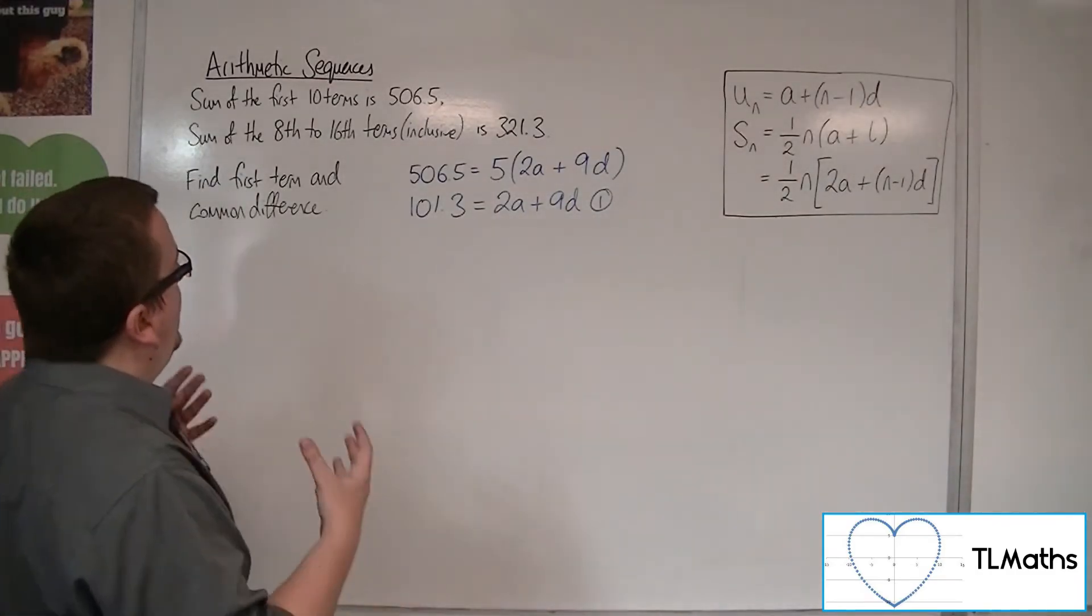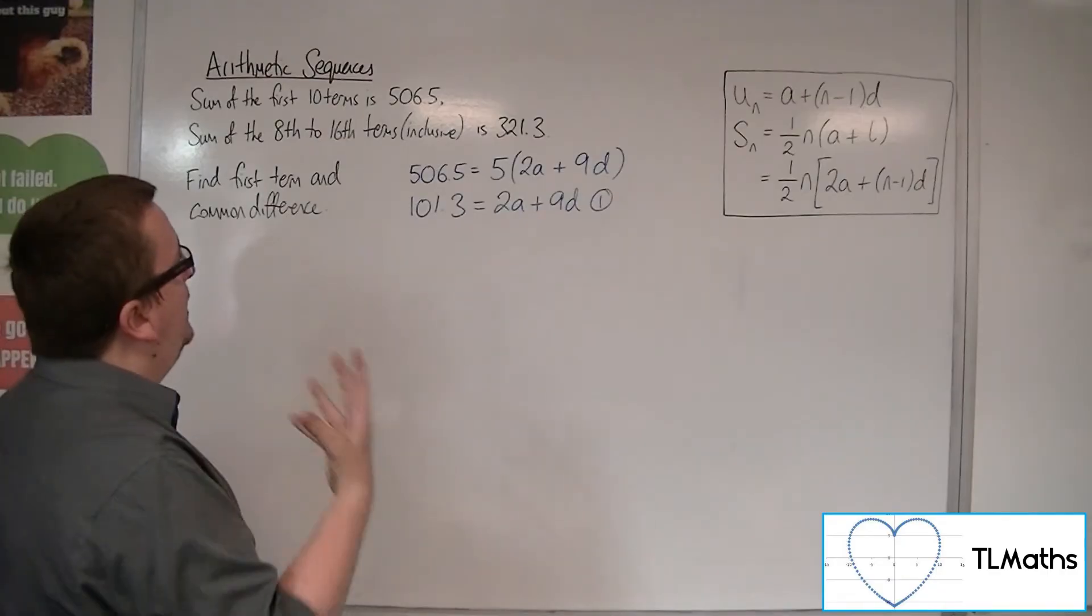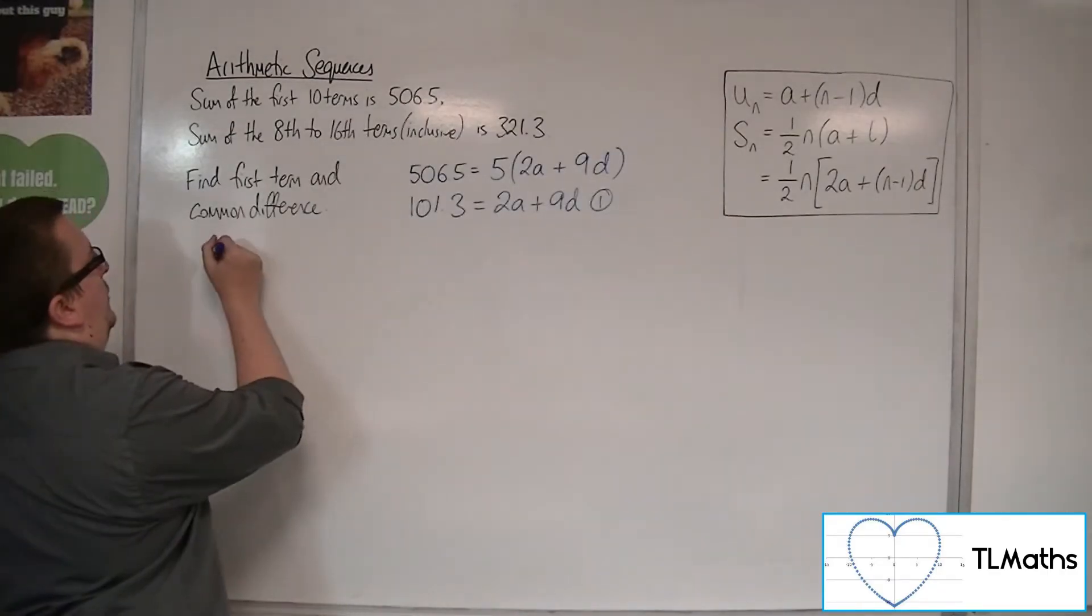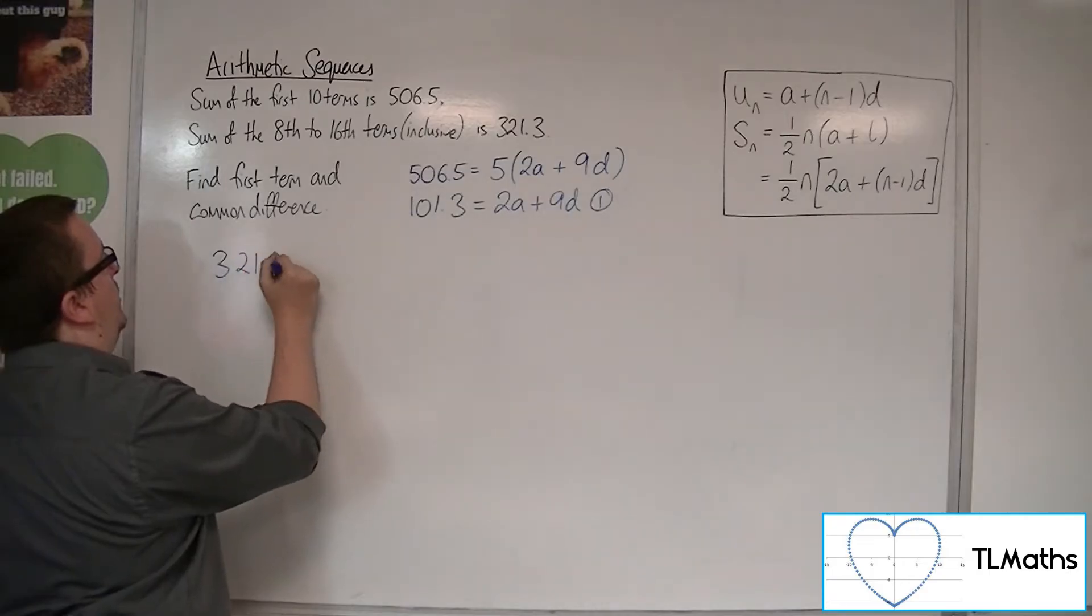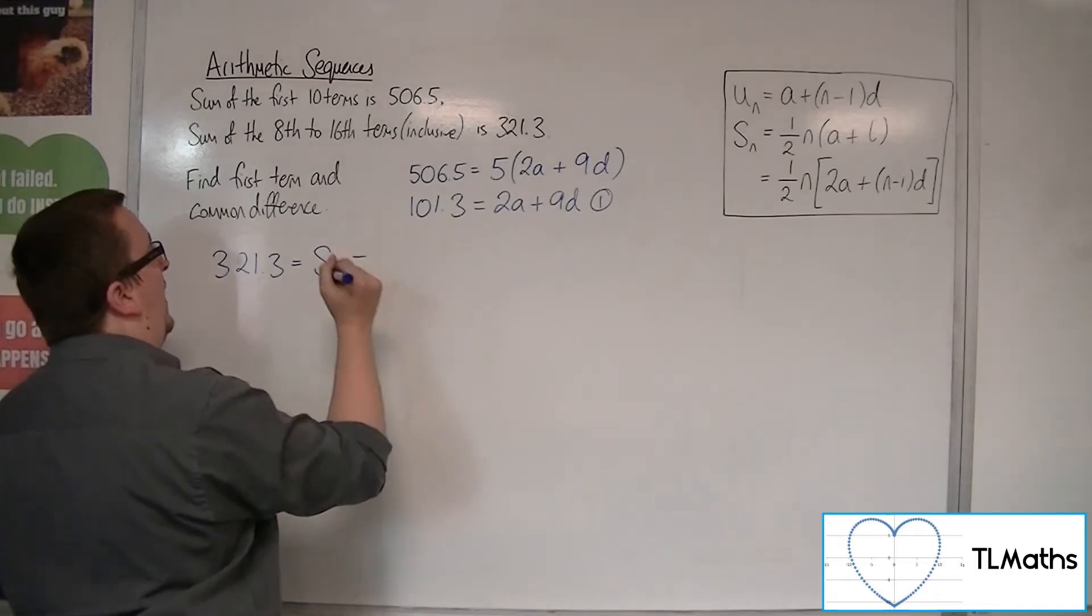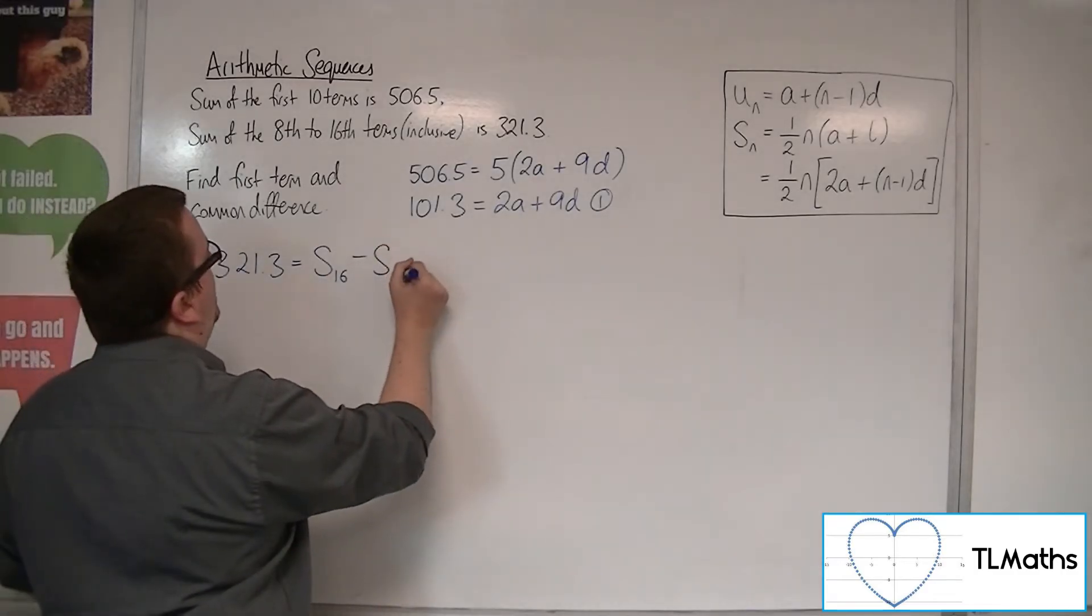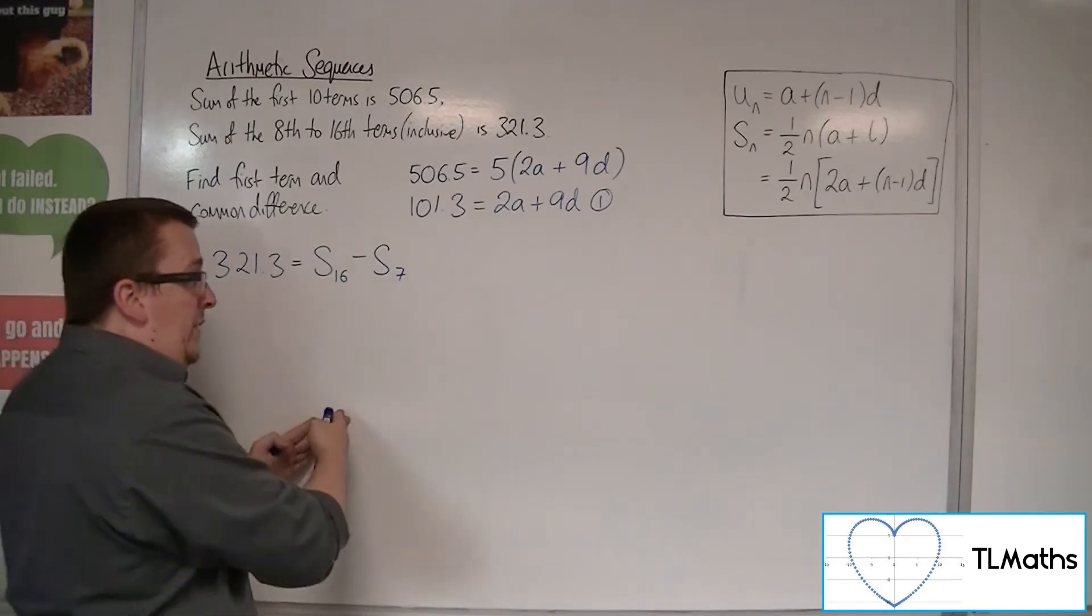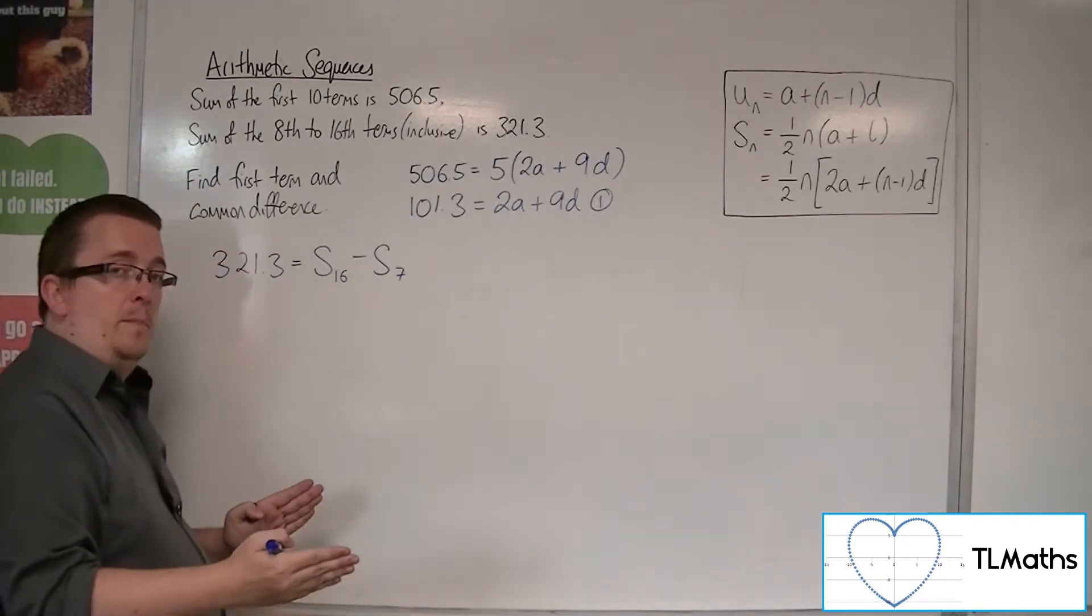Now, if the sum of the 8th to the 16th terms inclusive is 321.3, that means that 321.3 must be equal to the first 16 terms added together, take away the first 7 terms added together, because that gives me the 8th to the 16th terms combined.